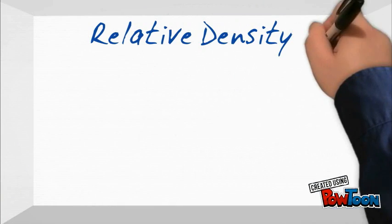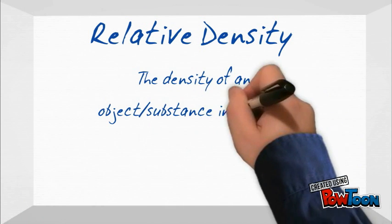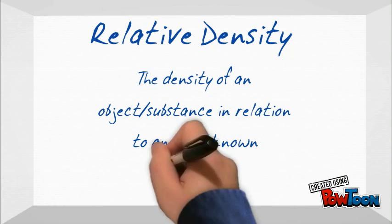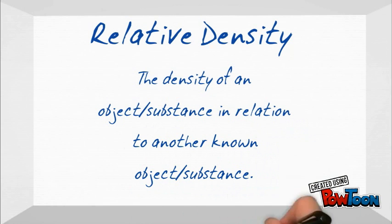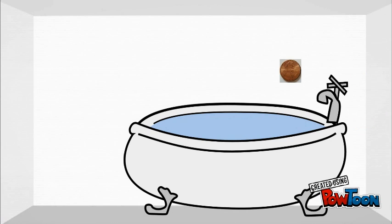Now let's talk about relative density. That simply means we will see the density of a material in relation to a known substance. For example, let's look at water. If I have a tub of water and I put a plastic spoon in the water, will it sink or float? It floats — because its density is less than the density of the water.